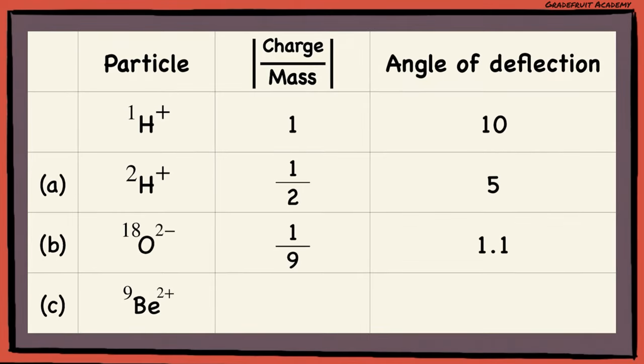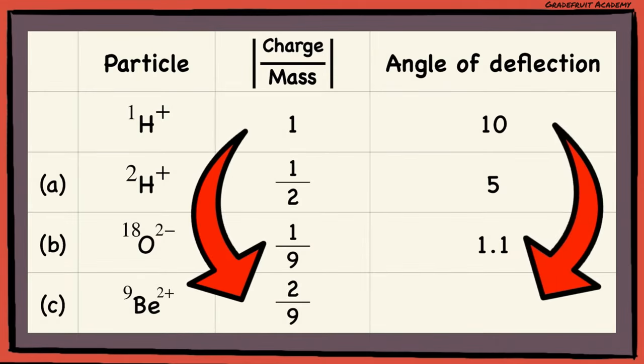For part C, the magnitude of the charge-to-mass ratio is 2/9. Hence, the angle of deflection will be 10 times 2/9, which is 2.2 degrees, rounded to 1 decimal place.